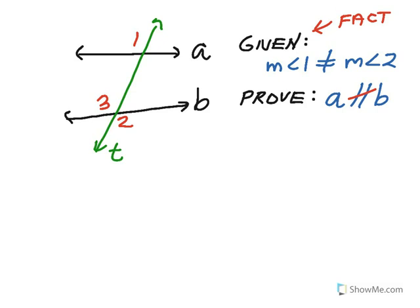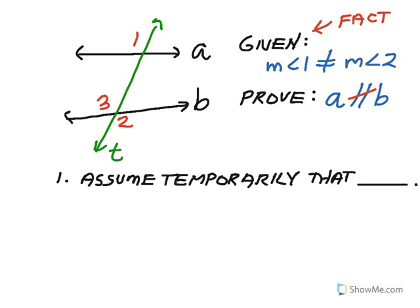Okay. So, the given is that angle one does not equal angle two, those two measures. What we have to prove is that A, line A, is not parallel to line B. Okay. So, our first step is assume temporarily that. And what we're going to do is we're going to take the opposite of what we're trying to prove. So, we're going to temporarily assume that line A is parallel to line B. So, that's step one.